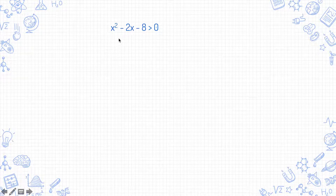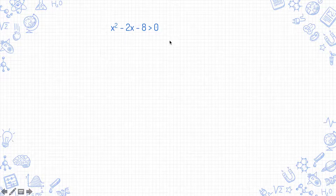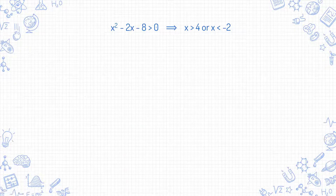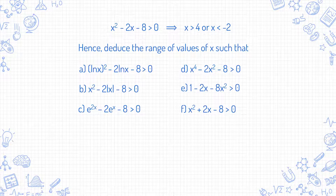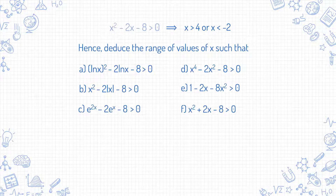Suppose in the first part of the question, you solve the inequality x²-2x-8>0, the solution of which is x>4 or x<-2. Then the next part of the question requires you to deduce the solution of another inequality. What you're supposed to do is figure out how each expression is related to this and deduce the solution from here.